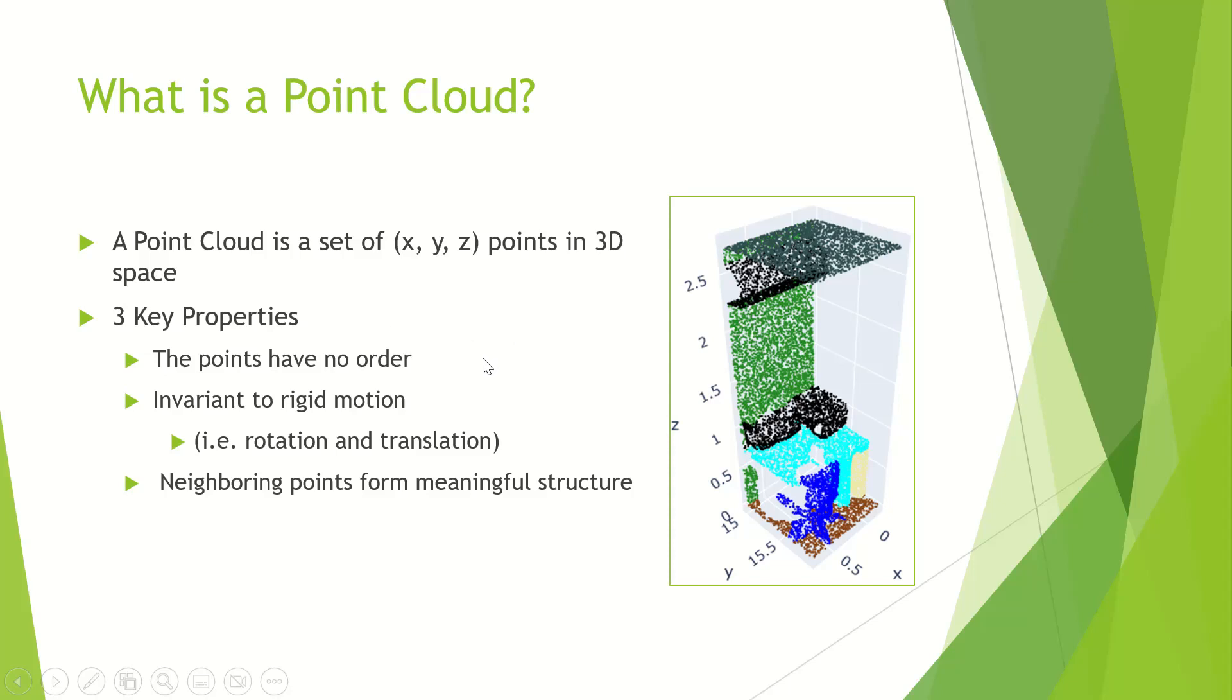The three properties that a point cloud has that PointNet is able to exploit is that points have no inherent order. We can display all the points here, like in our image on the right, and we can take these points, shuffle them, and then display them again, and we still get the same exact point cloud. Nothing has changed.